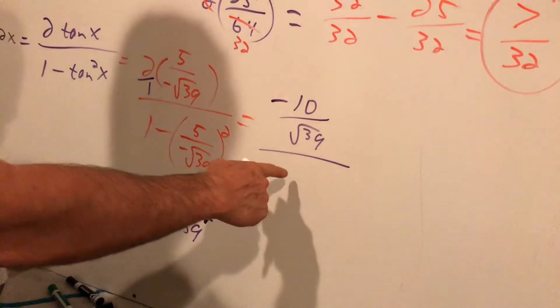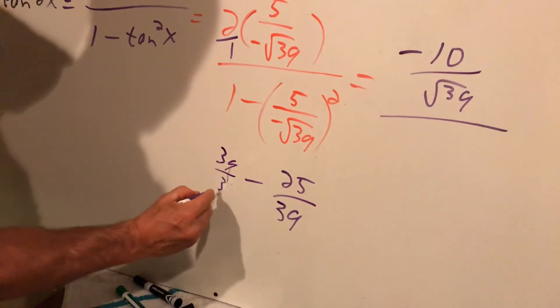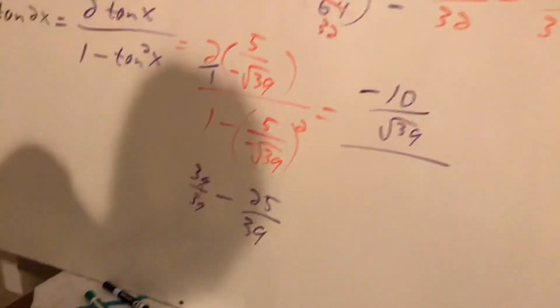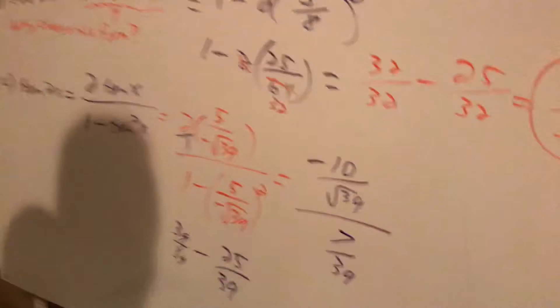I'm going to add this together and get this here. So I'm going to change this right now. This 1 will become 39 over 39, minus 25 is going to get me 7 over 39.